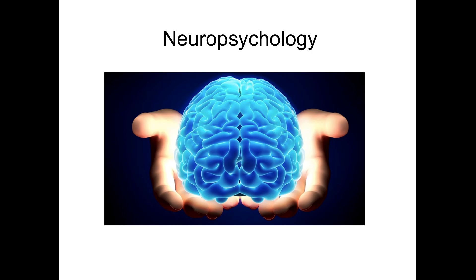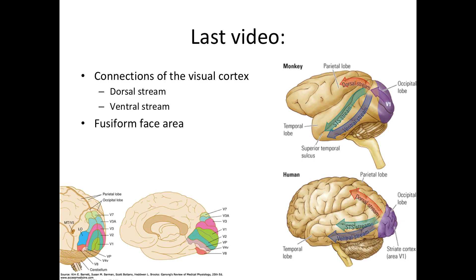Hi everyone and welcome back to Neuropsychology. In the last video we talked about the occipital lobe, mainly the two connectivity streams — the dorsal stream and the ventral stream. The dorsal stream goes from the occipital lobe to the parietal lobe, while the ventral stream consists of the STS stream and the IT stream. We also talked about the fusiform face area.